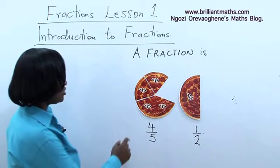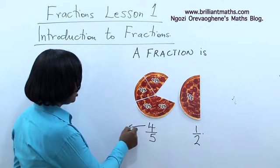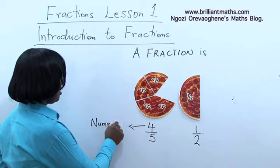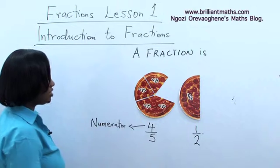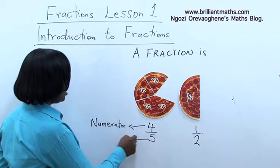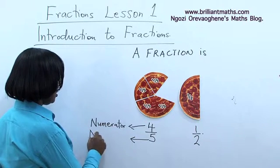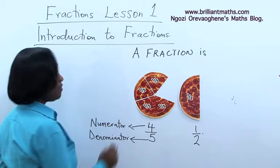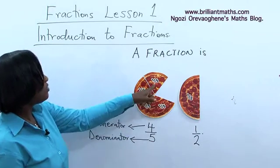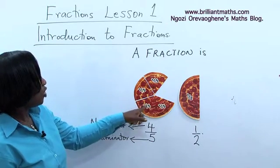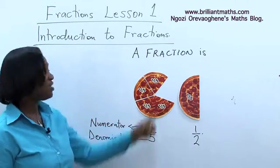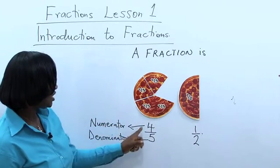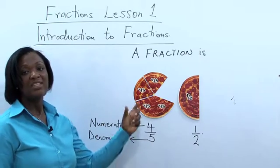In a fraction, the number on top is called the numerator and the bottom one is called the denominator. The bottom number tells you how many places the whole has been split, how many parts has been cut into, and the top number tells you how many is left.